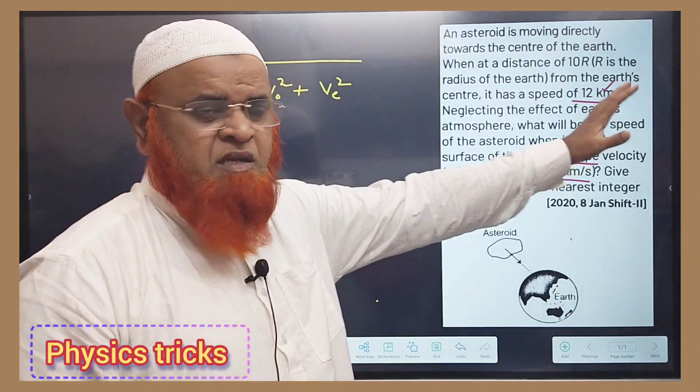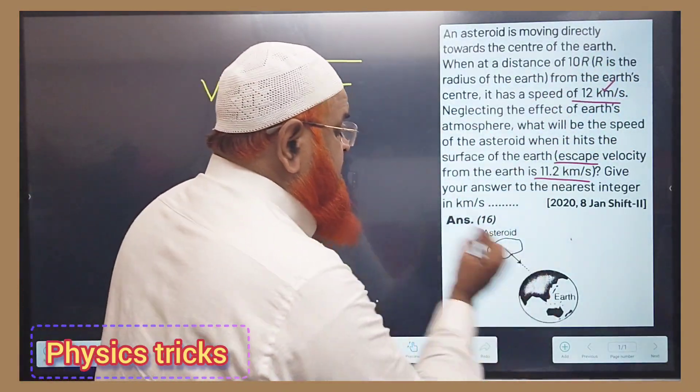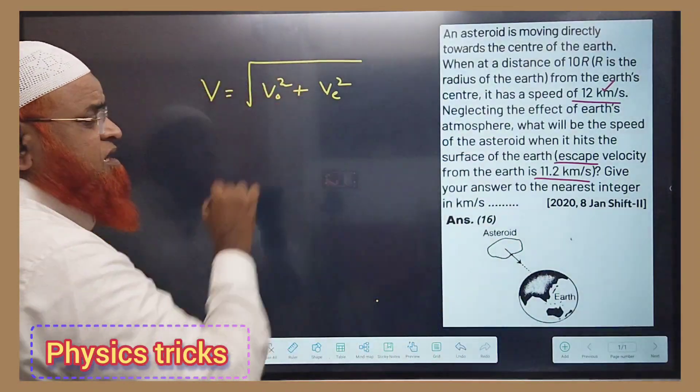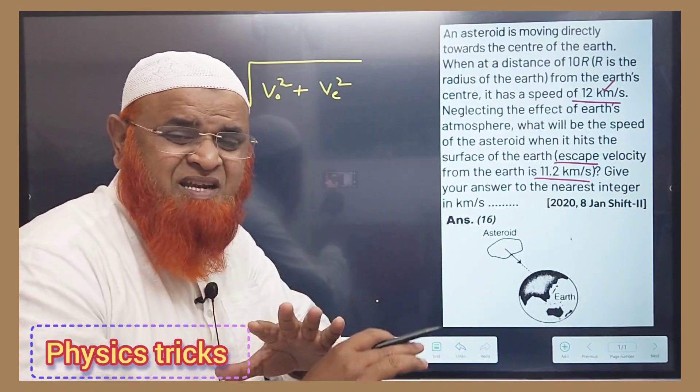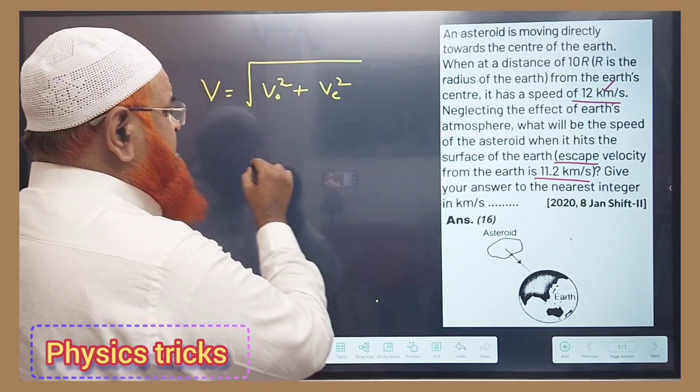The simple thing is, if you want to find out the velocity on the earth, just take the square root of orbital velocity squared plus escape velocity squared. That's it. You will get the answer directly in a fraction of seconds.